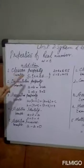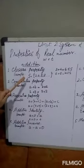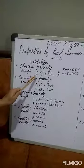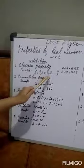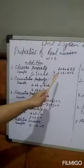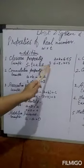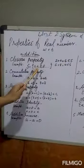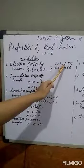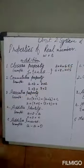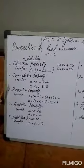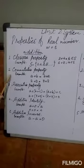The first property is the closure property. It means the sum of two real numbers is also a real number. For example, let the set S be {2, 4, 6, 8} — a set of even numbers. If you add any two elements from S, the result also belongs to S. The next property is the commutative property.